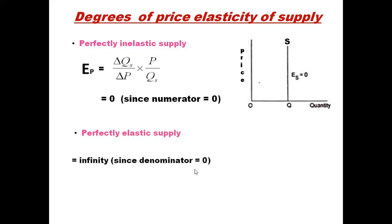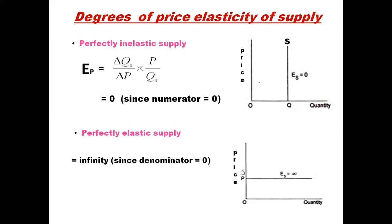Next is perfectly elastic supply, where elasticity equals infinity. Here price remains constant, so ΔP is zero, and dividing by zero gives infinity. The supply curve is a straight line parallel to the X-axis. Producers are willing to supply an infinitely large quantity at the fixed price. This situation rarely happens but is studied as a benchmark.